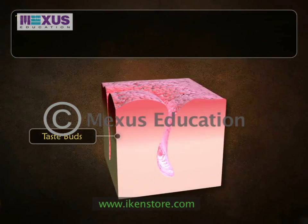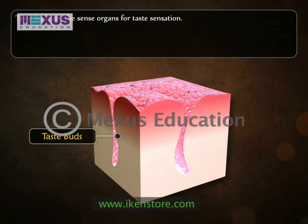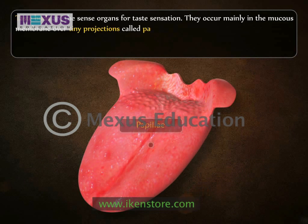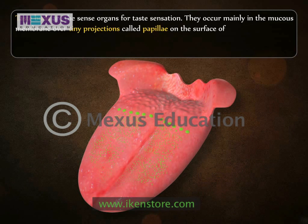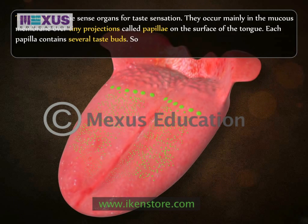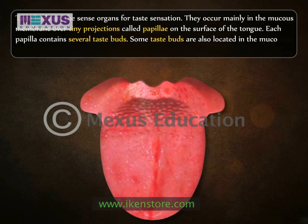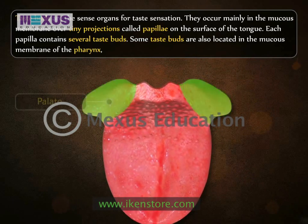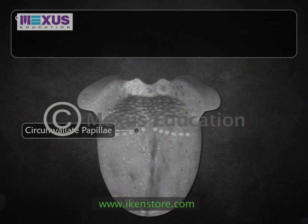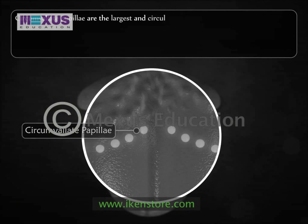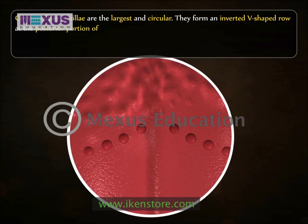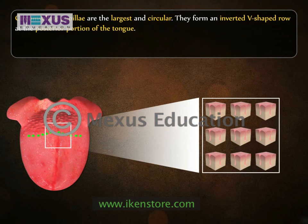Taste buds are the sense organs for taste sensation. They occur mainly in the mucous membrane over tiny projections called papillae on the surface of the tongue. Each papilla contains several taste buds. Some taste buds are also located in the mucous membrane of the pharynx, palate, and epiglottis. Circumvallate papillae are the largest and circular. They form an inverted V-shaped row at the posterior portion of the tongue and all of them contain taste buds.